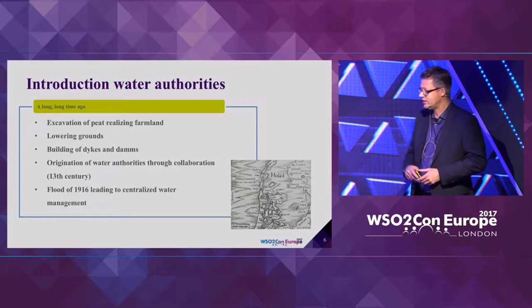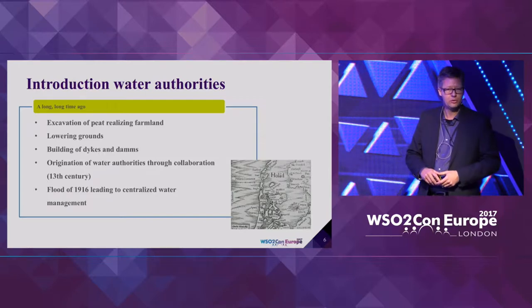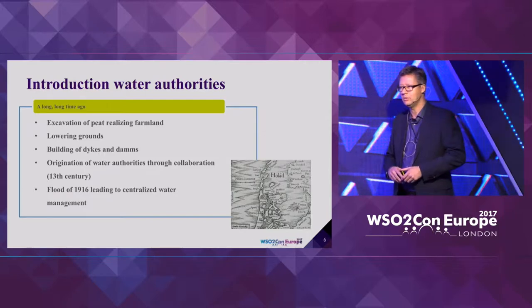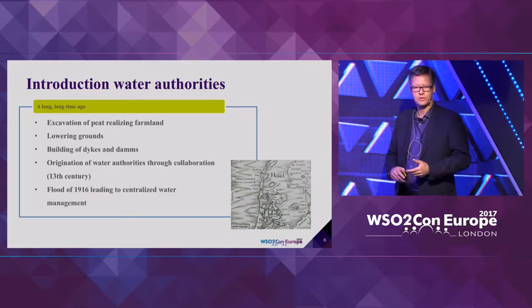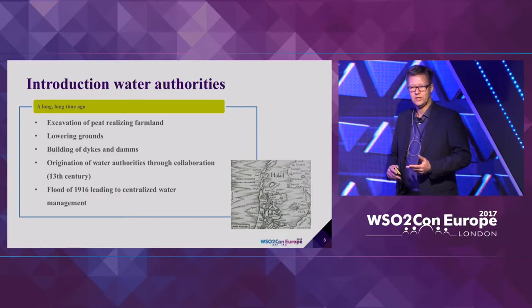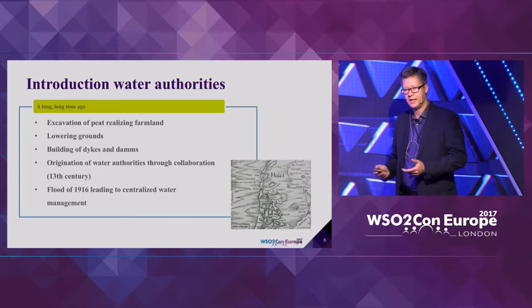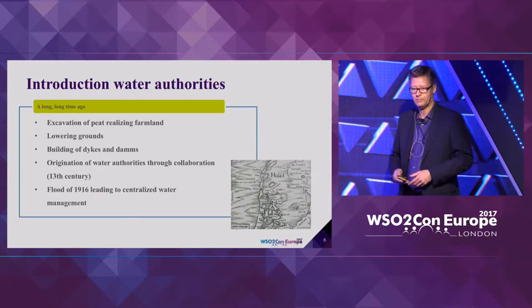In 1916, there was a big flood, which led to a more centralized coordination of the regional water authorities. At the moment, there are 22 regional authorities in the Netherlands who manage the water.